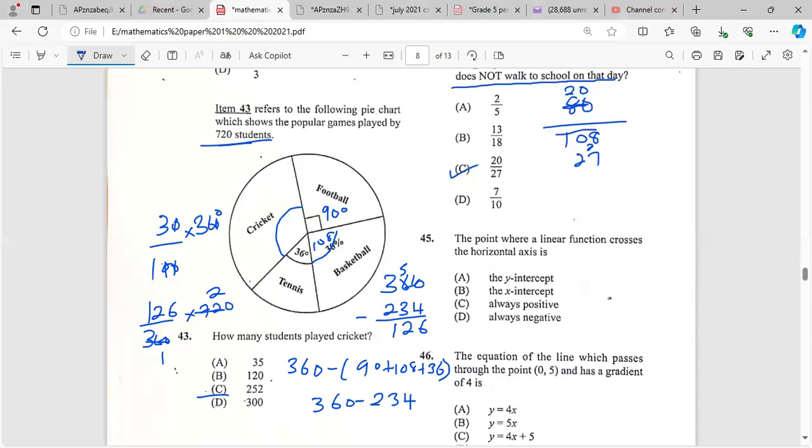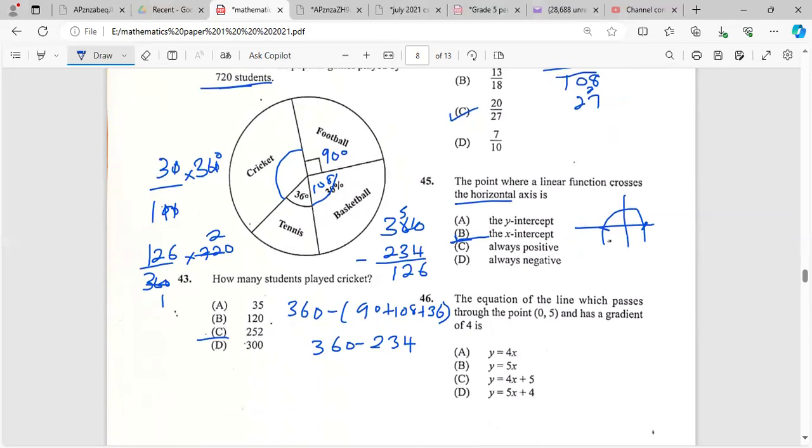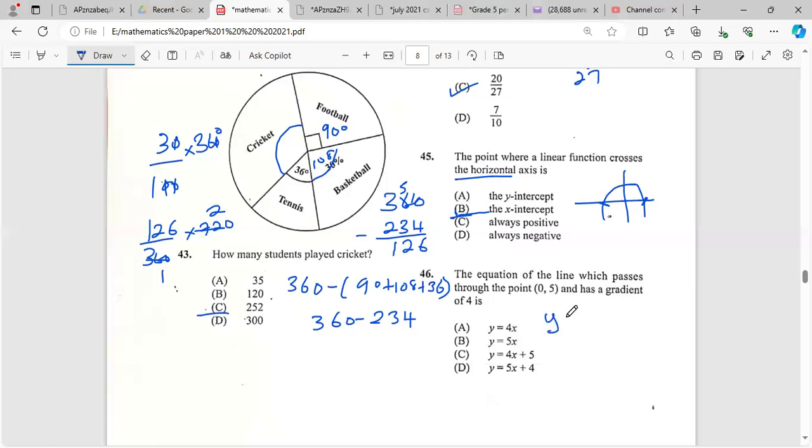The point where a linear function crosses the horizontal axis - notice it's not the y-axis - that would be the x-intercept where it crosses the x-axis. The equation of the line that passes through the point (0, 5) and has a gradient of 4: y equals mx plus c. They give us the gradient of 4 and it passes at (0, 5), so that's c. Therefore y equals 4x plus 5.